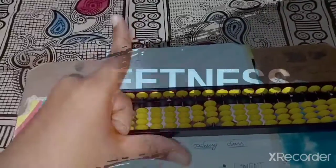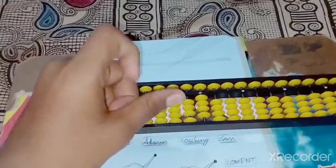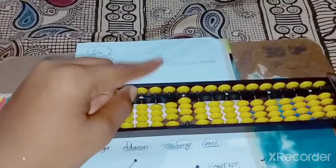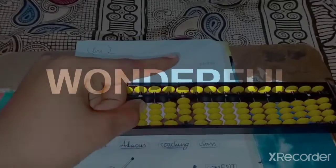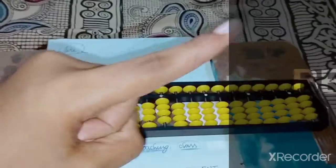And friends, we will use these two fingers for learning of Abacus. These lower beads are at minus and plus. For upper beads, these are only plus. These are only minus.